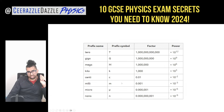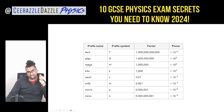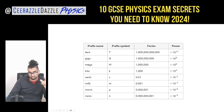Tip ten: learn all the prefixes. Starting from the smallest: nano (n) = ×10⁻⁹, micro (μ) = ×10⁻⁶, milli (m) = ×10⁻³, centi (c) = ×10⁻², kilo (k) = ×10³, mega (M) = ×10⁶, giga (G) = ×10⁹, tera (T) = ×10¹². Make sure you can use all of them — you must remove prefixes before substituting values into formulas.